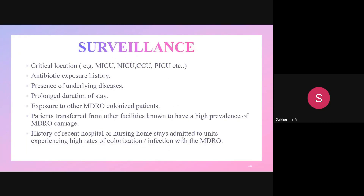Surveillance: proper hospital infection surveillance should be maintained across critical locations. Patients should be monitored for previous antibiotic exposure history, underlying diseases, prolonged duration of stay, exposure to MDRO-colonized patients, transfer from facilities with high prevalence of MDRO carriage, and recent hospitalization within 90 days — all should be monitored to assess MDRO risk.